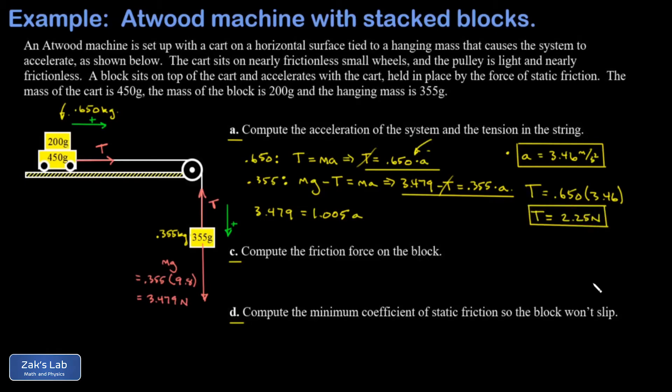Now in part C, we start to zoom in and focus on this 200-gram block that's being dragged along by the force of friction. If there was no friction force, that block would just stay at the same x-coordinate and the cart would slip out from underneath it. And the reason it's accelerating with the cart is that there's a static friction force pointing to the right.